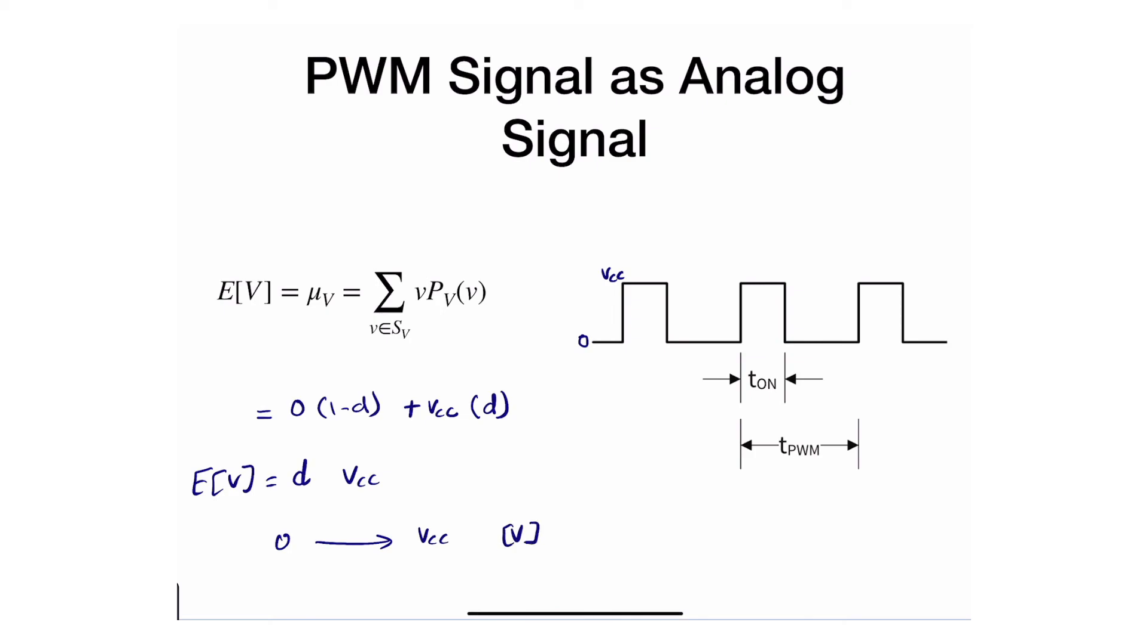So by controlling the duty cycle, you're controlling the amount of voltage that the analog device is seeing, and in turn, it's the amount of power you're providing to the analog device. And this is why we care about duty cycle, and that metric is what we usually change in the pulse width modulation.